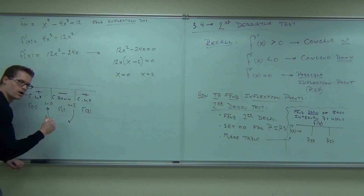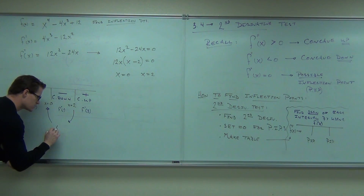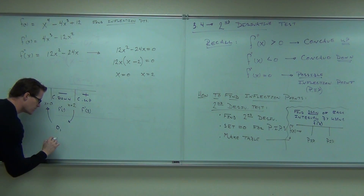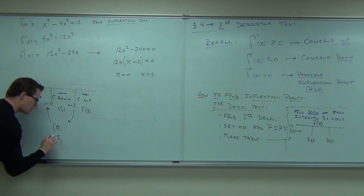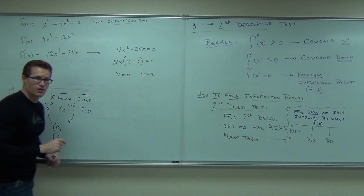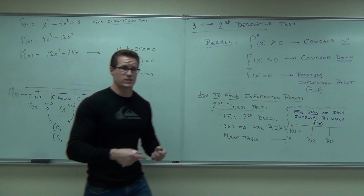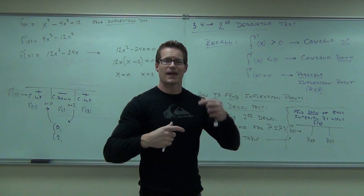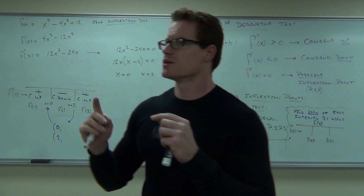That's the x value for my inflection point. I want 0 comma something and 2 comma something — those are my x coordinates of my inflection points. How do you find the points themselves?